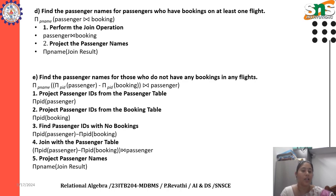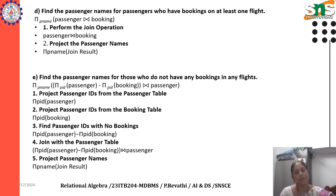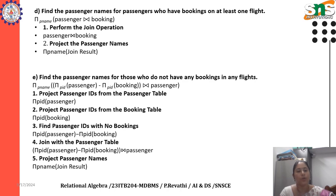Next, project passenger ID from the booking table — projection of PID of booking. To find the passenger IDs with no bookings, compute projection PID of passenger minus projection PID of booking, then join with the passenger table.